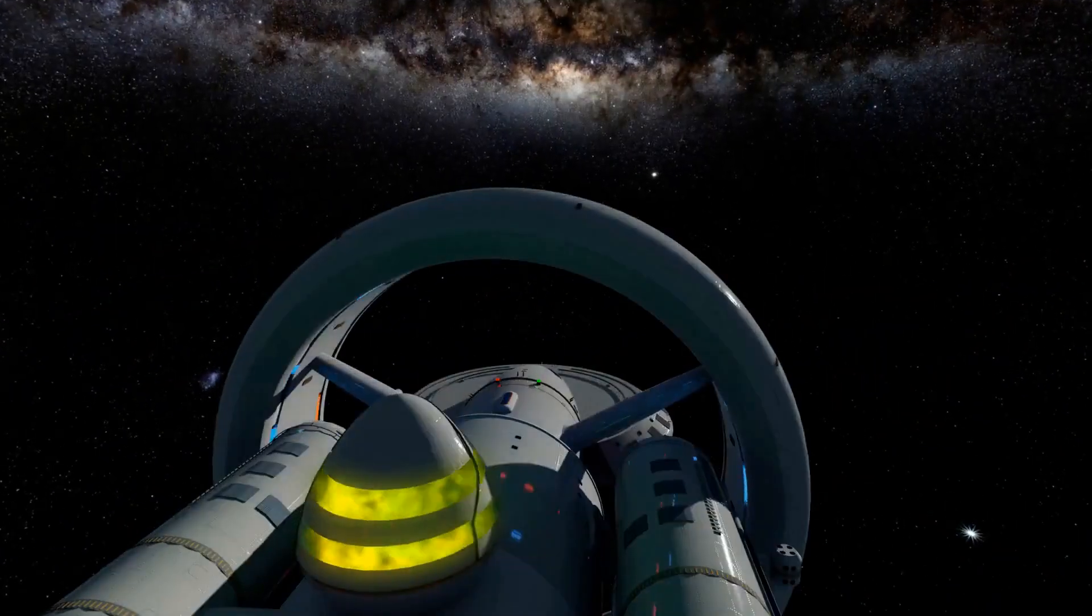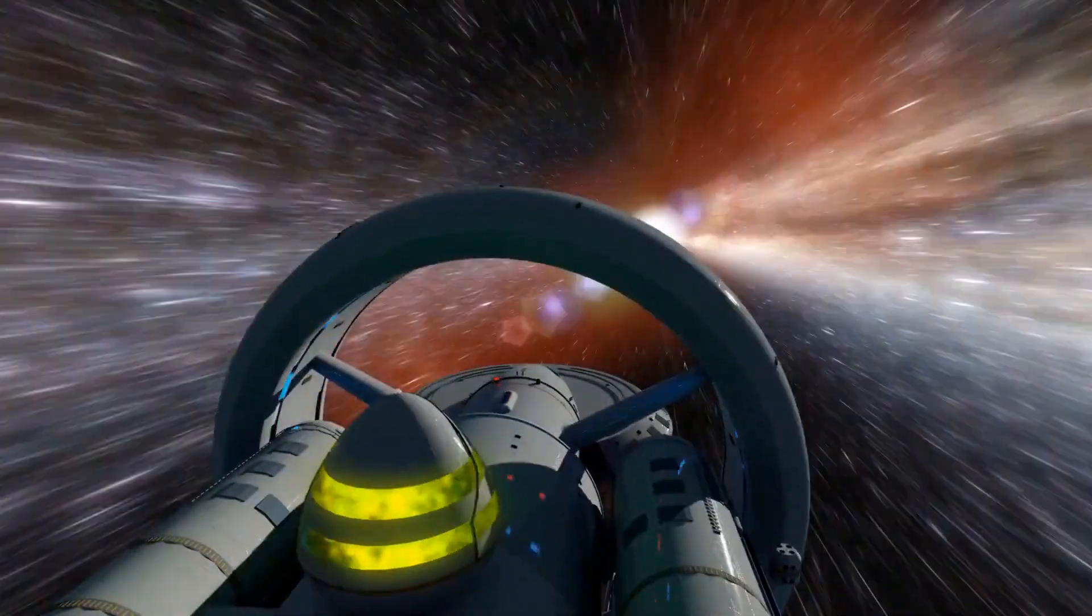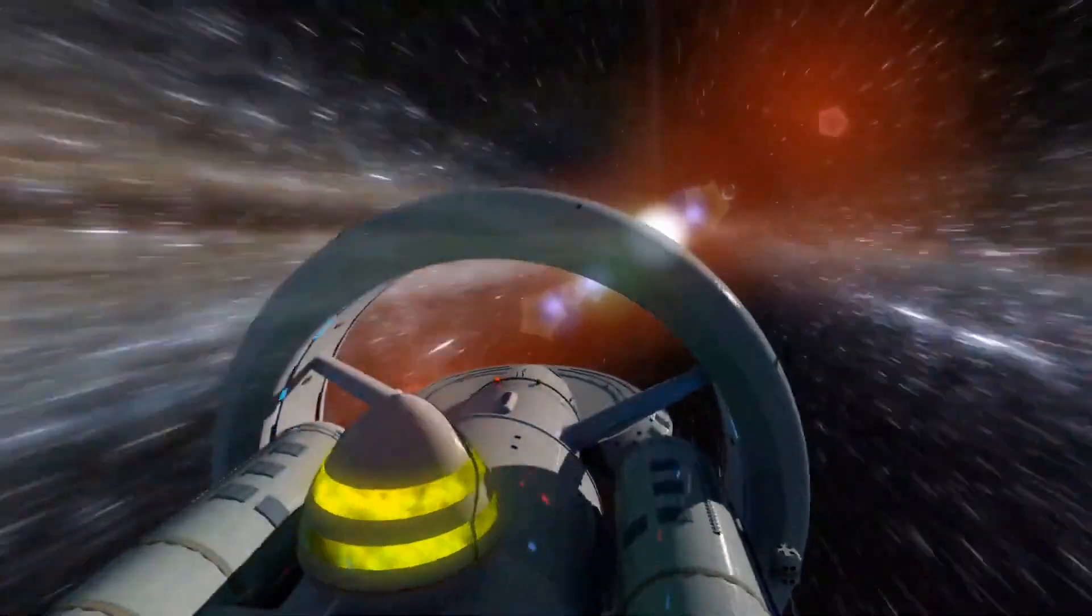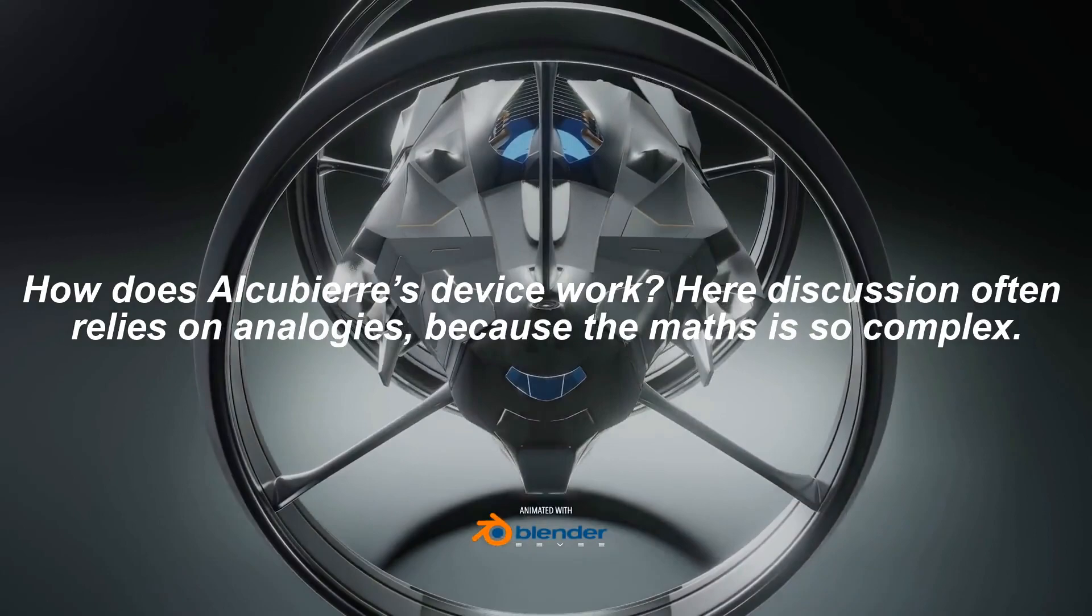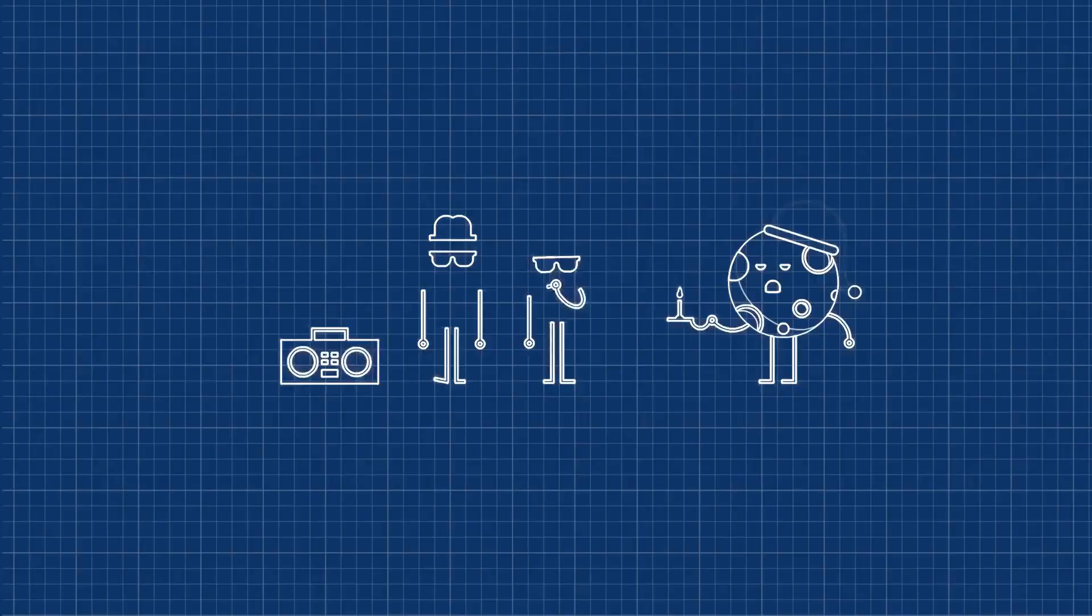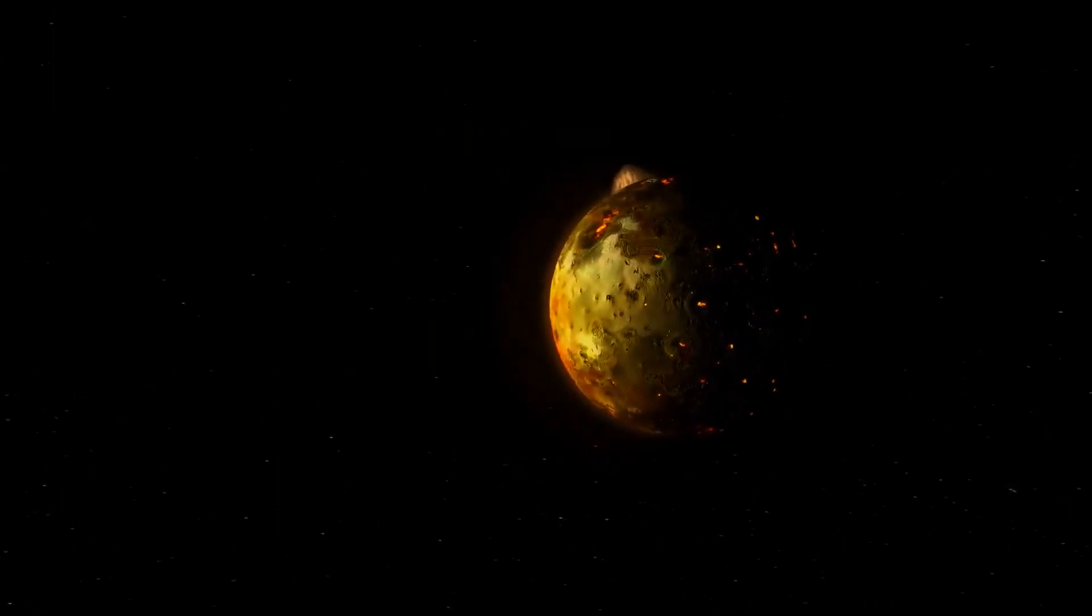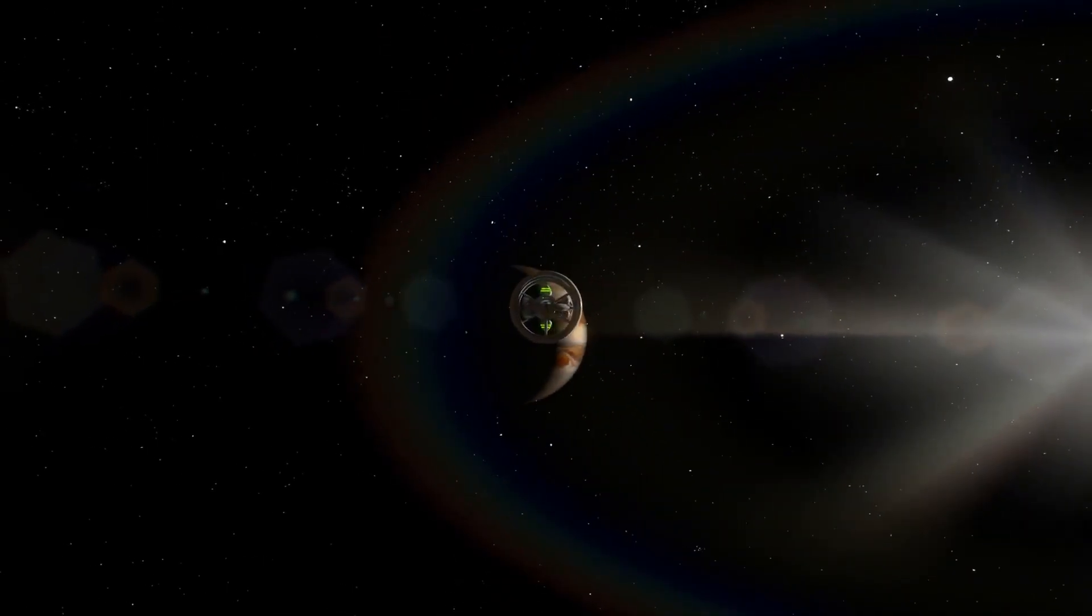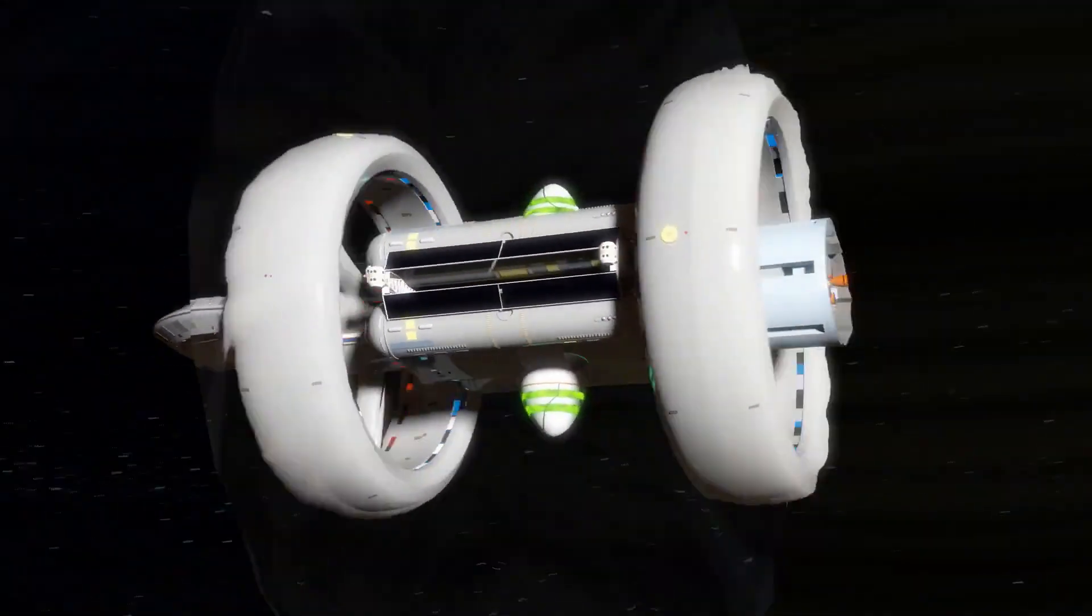Such a drive would also avoid the uncomfortable consequences of time dilation. One could potentially make a round trip into deep space and still be greeted by one's nearest and dearest at home. How does Alcubierre's device work? Here, discussion often relies on analogies because the math is so complex. Imagine a rug with a cup on it. You are on the rug and you want to get to the cup. You could move across the rug, or tug the rug towards you.